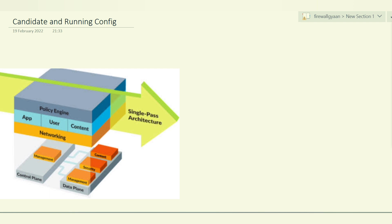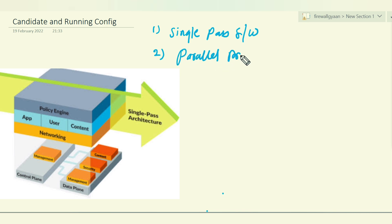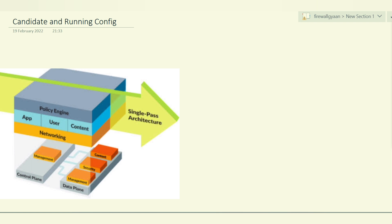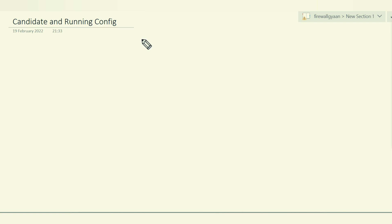Let's see why they call it single pass parallel processing. In single pass architecture there are two additional components: number one is your single pass software, and number two is the parallel processing hardware. We already know what the single pass software is and how it reduces latency. In the parallel processing hardware, let's recap — in single pass parallel processing architecture you get the software component.